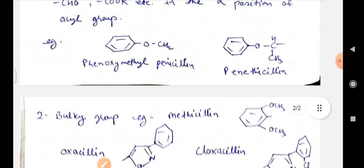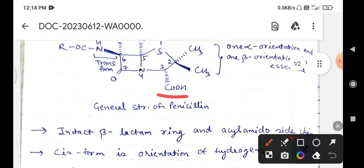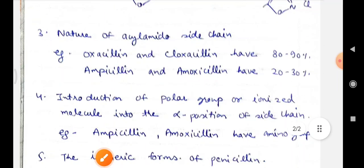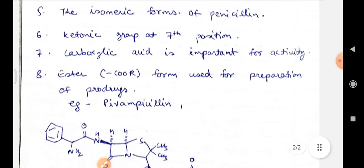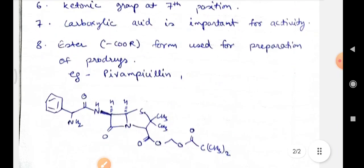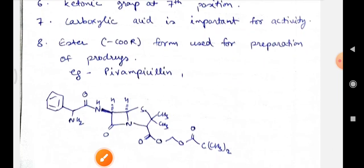Coming to the variation at the carboxylic group. The carboxylic acid is important for the activity because it is used to recognize the protein binding site located in the bacteria, and it also helps to penetrate the bacterial cell wall. The carboxylate ion binds to the charged ammonium ion of the lysine residue in the binding site. And this group is also used to form the ester forms of the drug, which is used for the preparation of prodrugs.